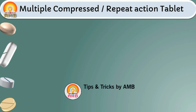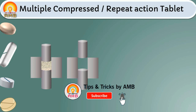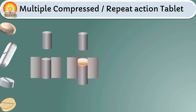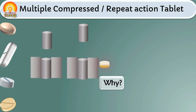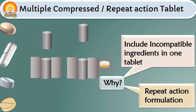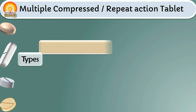Multiple compressed tablet, also called MCT, as the name indicates, these tablets are prepared by compressing more than one time, that is multiple times. These tablets are prepared if incompatible ingredients are to be included in a tablet, or to produce repeat action formulations or prolonged action formulations.